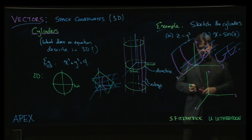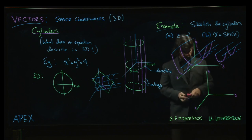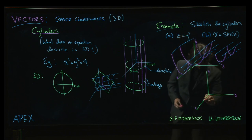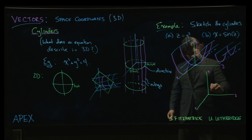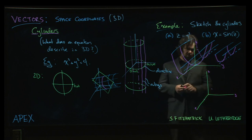x equals sine of z. So now we're thinking of, so z is our independent variable, x is dependent, and y is kind of free. We're going to slide things that way. So x is going to sort of run from minus one to one as we vary z.